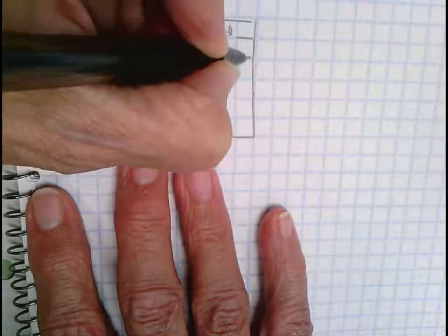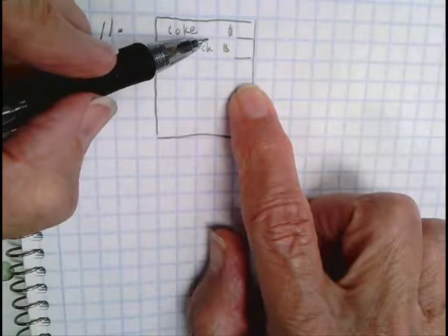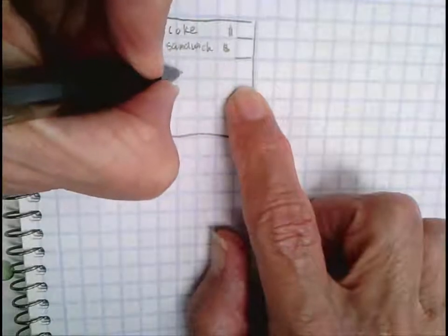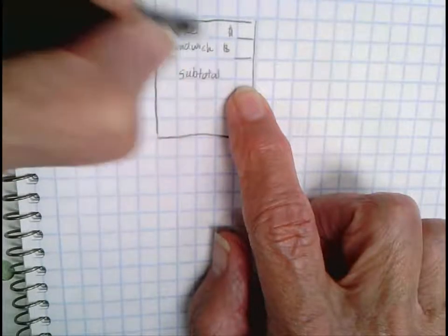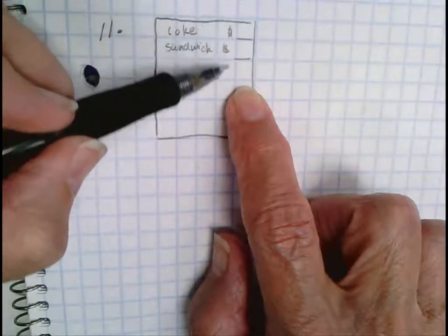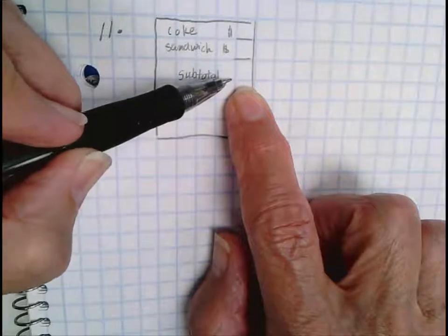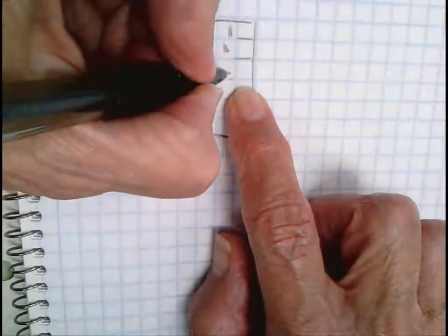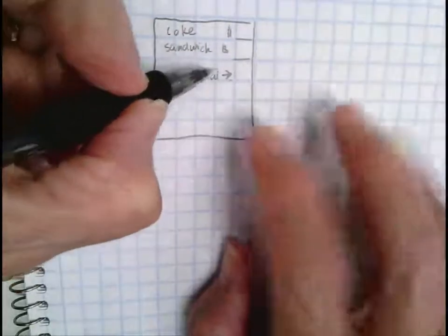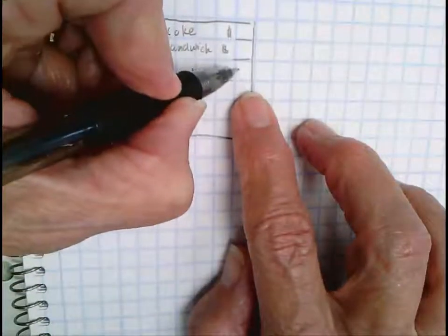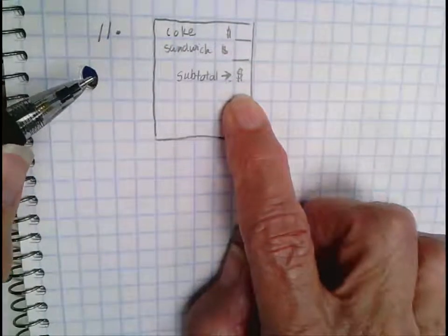Then generally you have something called a subtotal. A subtotal means, what's the total up to this point? They use the calculator and put in a number right here. So there's a dollar amount right there for the subtotal.